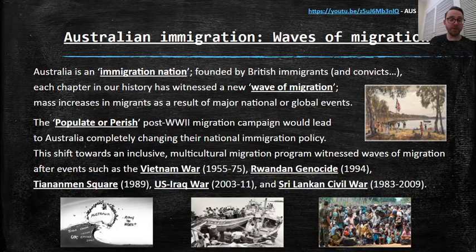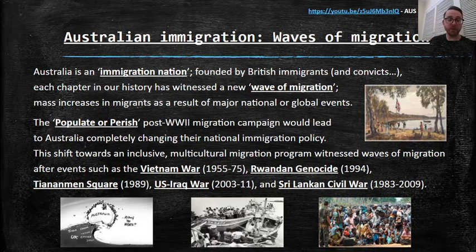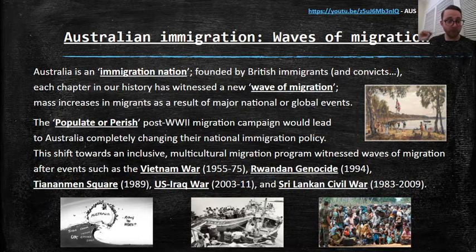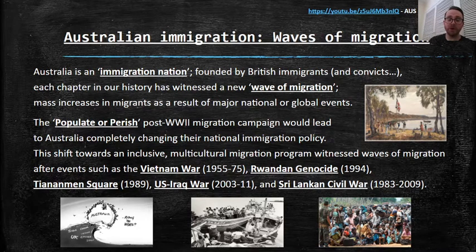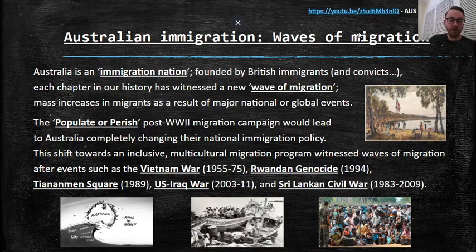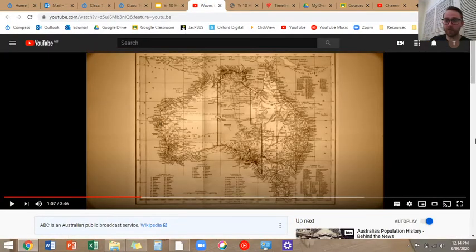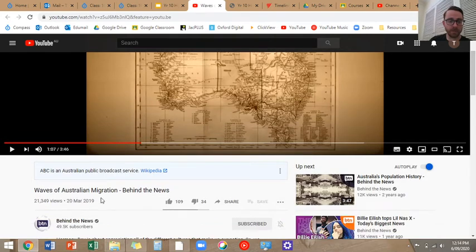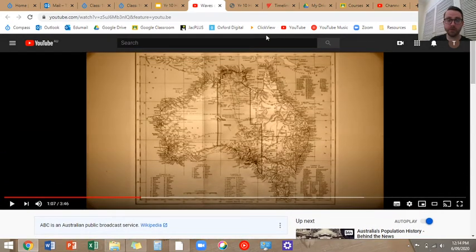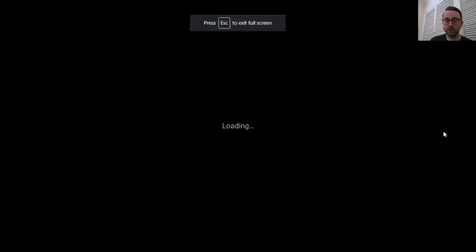The 'populate or perish' post-World War II migration campaign led to an Australian immigration policy that was dramatically different — we completely changed it. A shift towards an inclusive and multicultural migration program witnessed further waves of migration. We opened the door to refugees from events such as the Vietnam War, the Rwandan Genocide, Tiananmen Square, the US-Iraq War, and the Sri Lankan Civil War. I highly recommend the Behind the News video — it gives a quick three-minute summary of the different waves of migration and the people who have come to Australia from different countries.